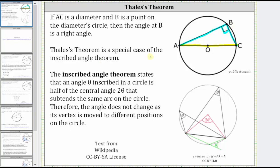Thales' Theorem is a special case of the Inscribed Angle Theorem. The Inscribed Angle Theorem states that an angle theta inscribed in a circle is half of the central angle two theta that subtends the same arc on the circle.